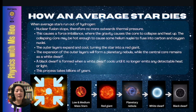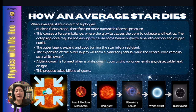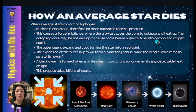For low and medium mass stars — referred to here as an average star — when the star runs out of hydrogen, there is no more nuclear fusion, and therefore no more outwards thermal pressure. This causes a force imbalance where gravitational pull inwards is unbalanced. This causes the core to collapse and heat up. The collapsing core may be hot enough to cause some helium nuclei to fuse into carbon and oxygen. As the inner layer heats up, the outer layers expand and cool, turning the star into a red giant.